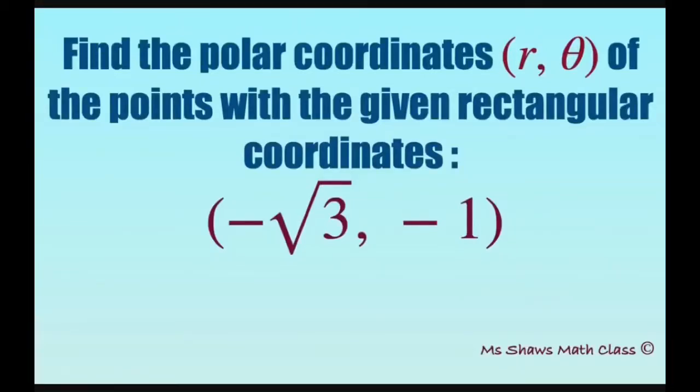Hi everyone, we're going to find the polar coordinates r, theta of the points with the given rectangular coordinates negative square root of 3, negative 1.